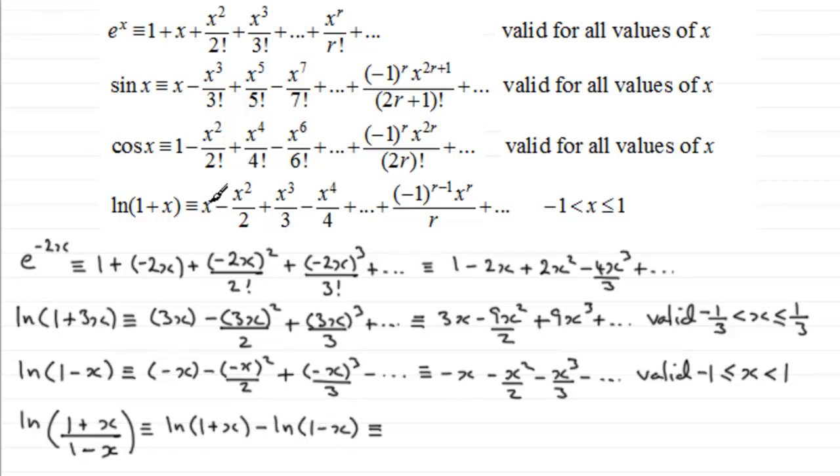So if we do that, we've got x minus minus x, that's going to be 2x. And then these two terms, the x squared terms, are going to cancel one another out. And here you'll have x cubed upon 3 minus minus x cubed upon 3, so it's going to be 2 of them. In fact, you're going to keep getting twice the odd powers. So the next one will be plus 2x to the power 5 over 5 and so on.